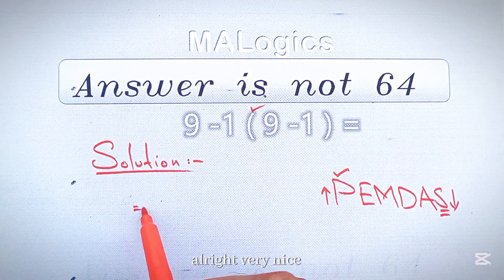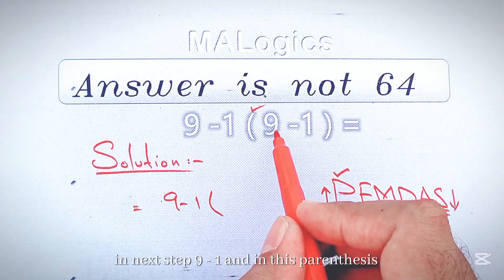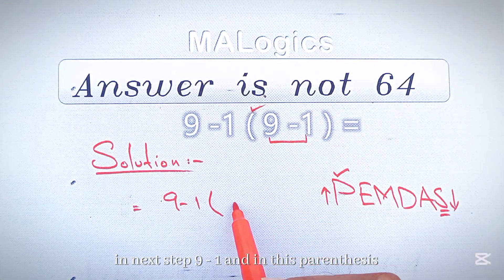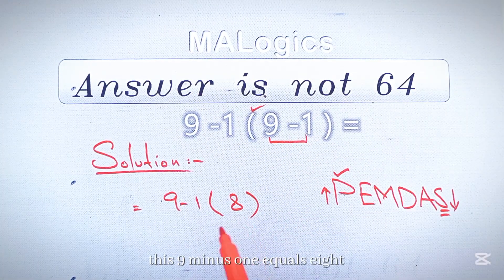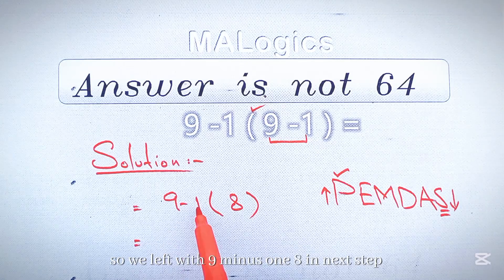Alright, very nice. In the next step, 9 minus 1, and in this parenthesis, this 9 minus 1 equals 8, so we're left with 9 minus 1 times 8.